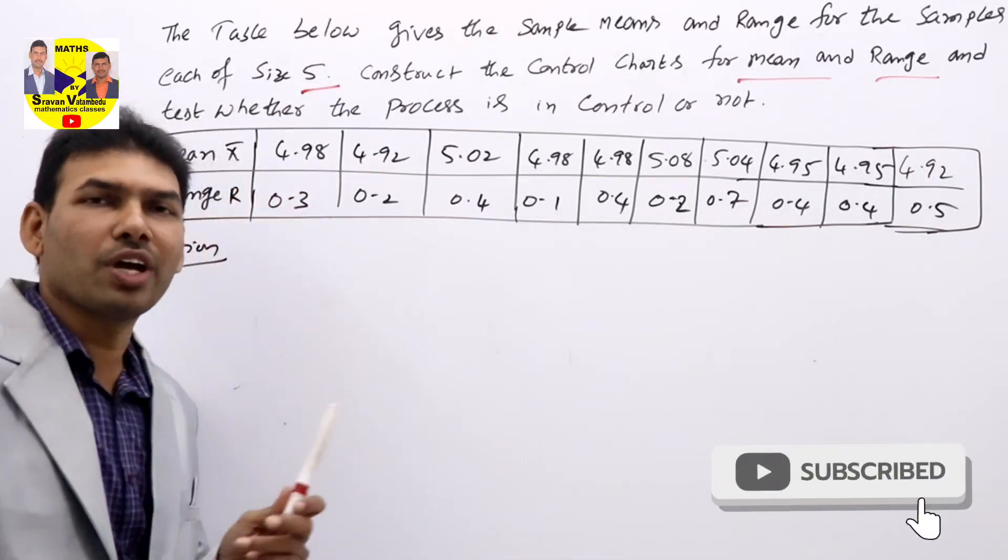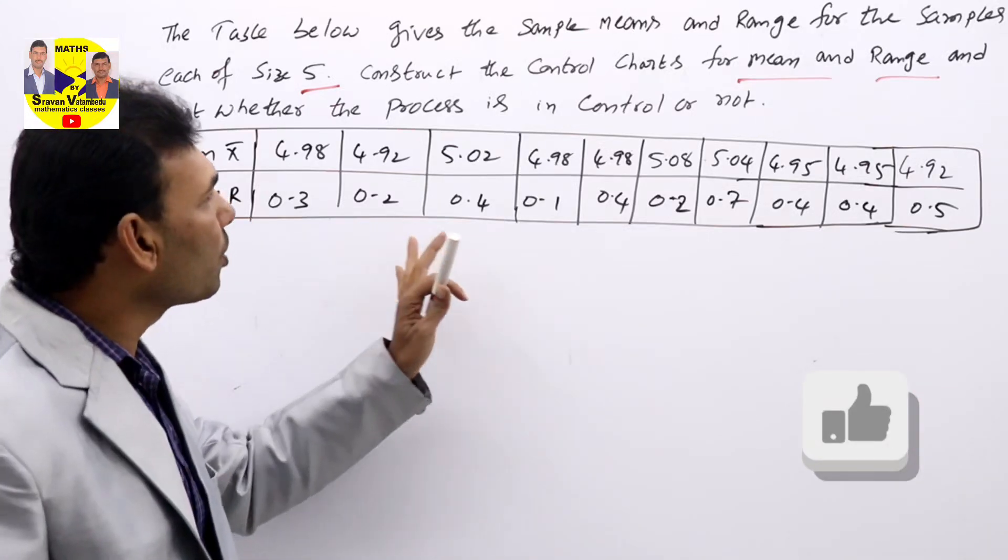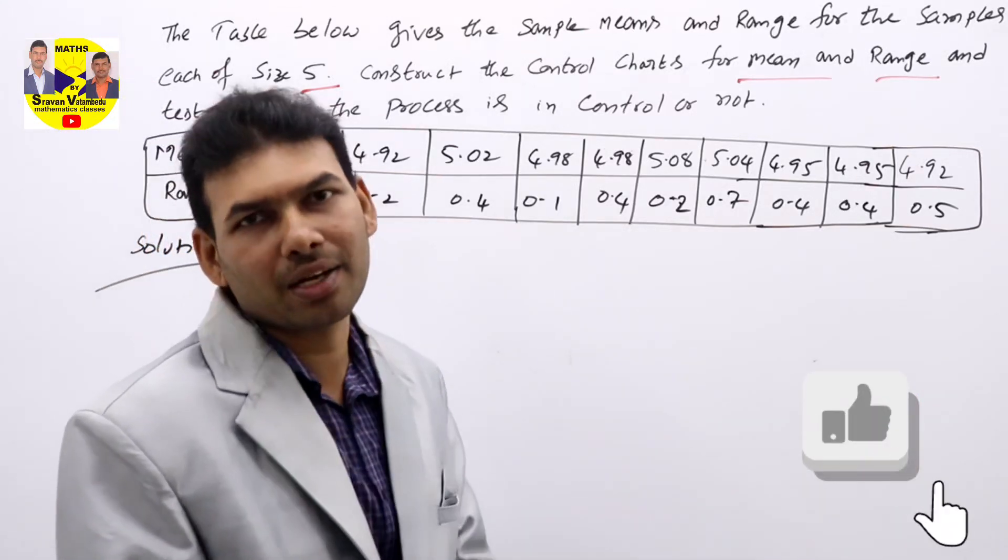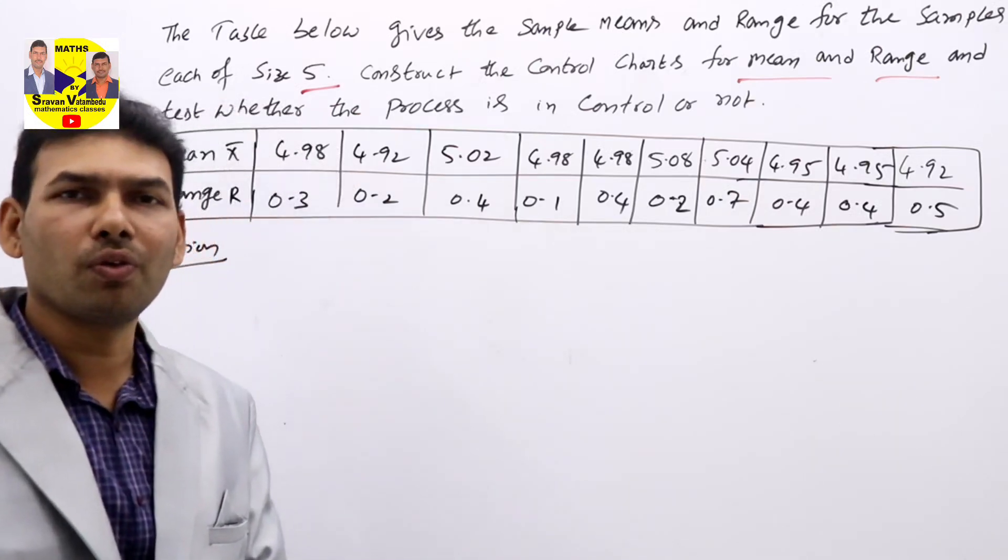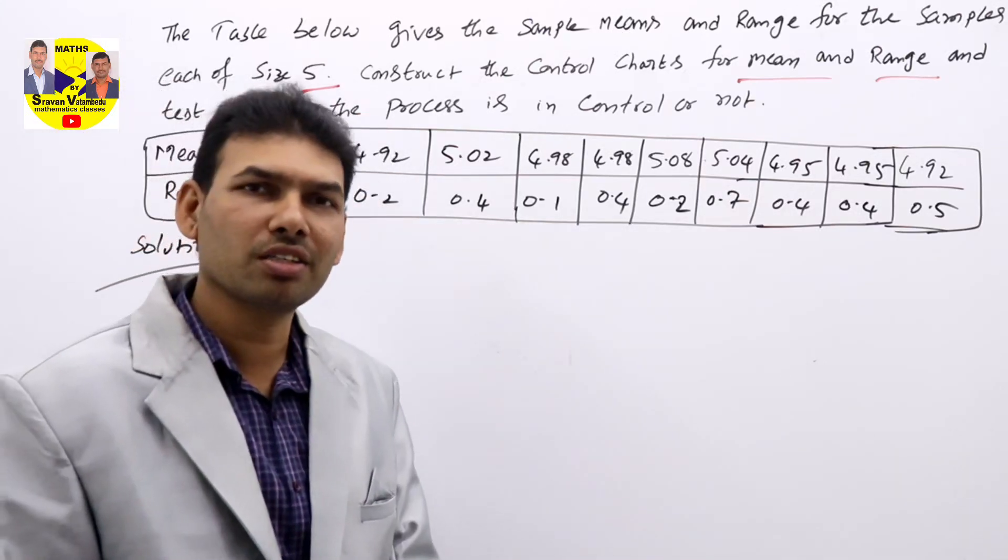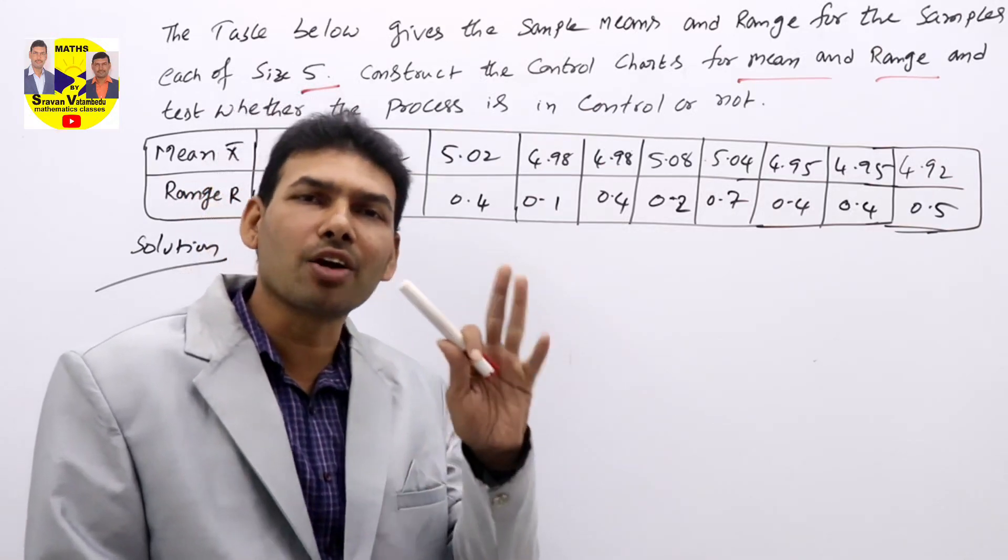Here we are going to discuss the control limits: what is CL, UCL, and LCL. If you know these, you can draw any chart, whether it's a range chart or mean chart.